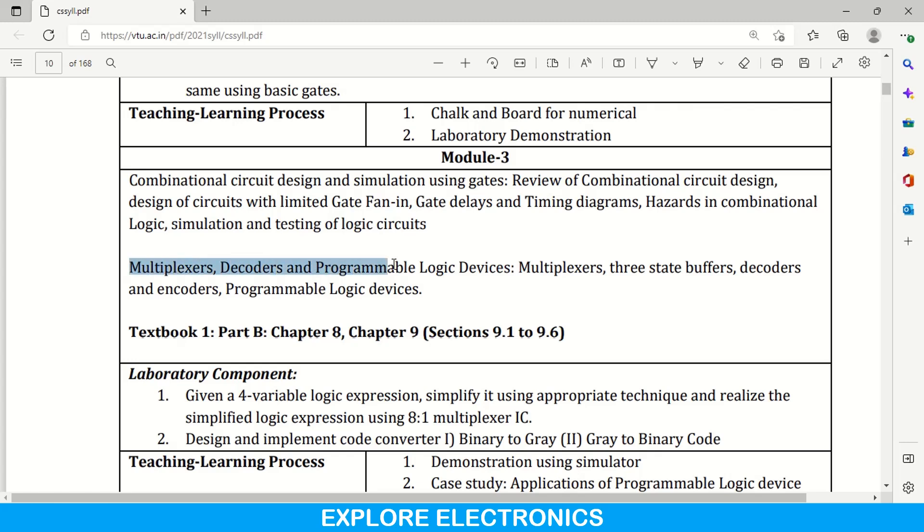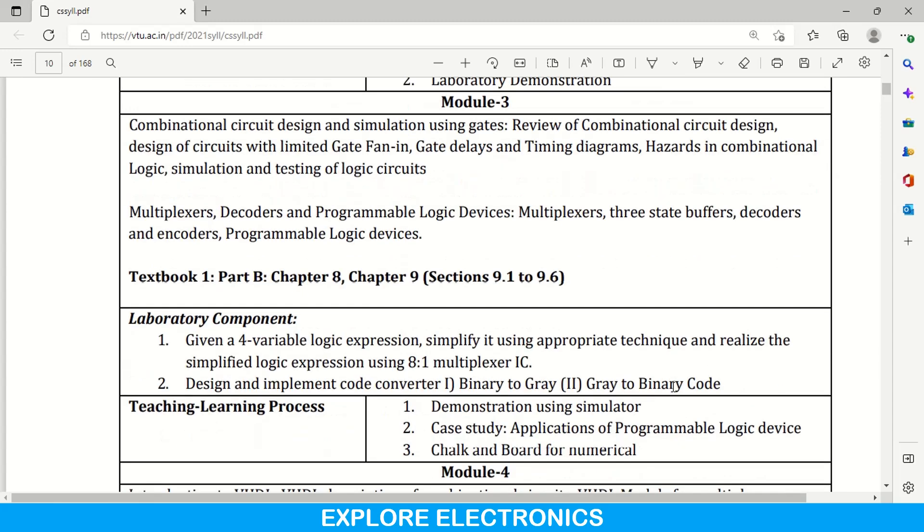And coming to the next half, multiplexer, decoder and programmable logic devices is the second half of the module. This covered in textbook 1 again, chapter 8 and chapter 9. With this module, the laboratory component includes a 4 variable logical expression is given again, simplify it using appropriate technique means using K-map or Quine-McCluskey method we need to simplify and realize using 8-to-1 multiplexer IC. This is the first experiment. Second experiment again a code converter binary to gray and gray to binary code.